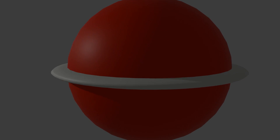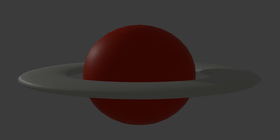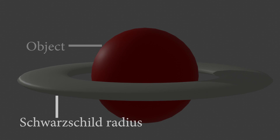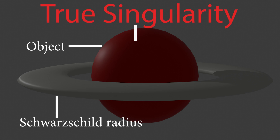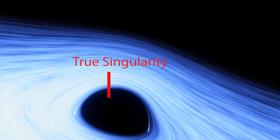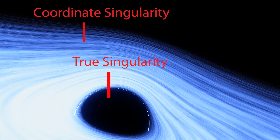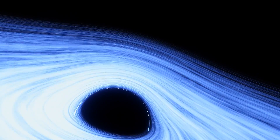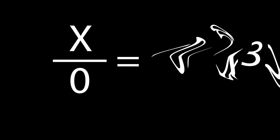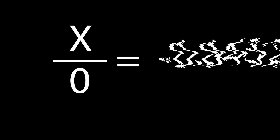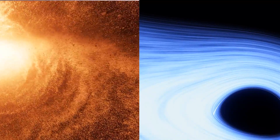However, this only works if the object's radius is bigger than its Schwarzschild radius. If the radius is smaller, then it becomes a true singularity — and this is what we find at the center of black holes or at the beginning of our universe: a theorized point with infinite density that breaks the laws of physics. The easiest way to explain a true singularity is comparing it to dividing by zero — the math just doesn't work and the numbers go off the charts. This true point is believed to happen in two circumstances: the Big Bang and black holes.